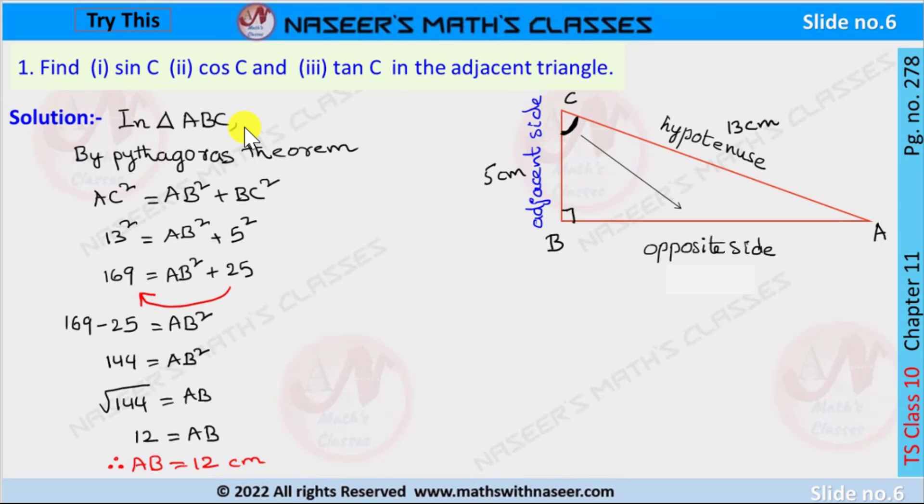In triangle ABC, by Pythagorean theorem we can write AC squared is equal to AB squared plus BC squared. Now substitute the AC value and BC value, then it can be written as 13 squared is equal to AB squared plus 5 squared.